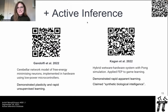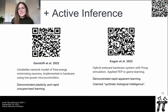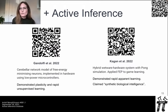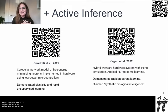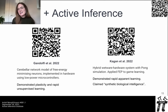Gandolfi et al. recently demonstrated plasticity and rapid unsupervised learning in a neuromorphic system using active inference principles, suggesting their experiments could be adopted to implement brain-like predictive capabilities in neuromorphic robotic systems. There was also the DishBrain paper by Kagan et al. — a hybrid wetware-hardware neuromorphic system that showed rapid apparent learning of the game of Pong using the free energy principle, claiming synthetic biological intelligence.